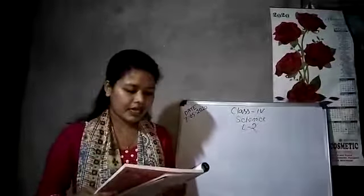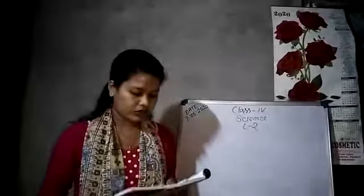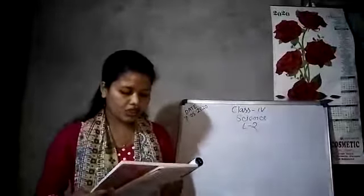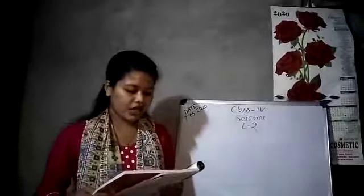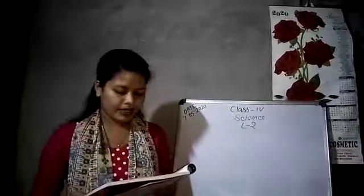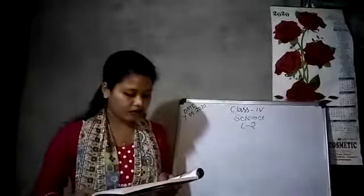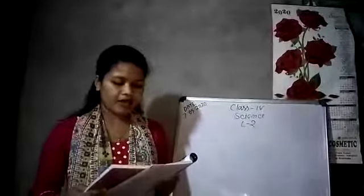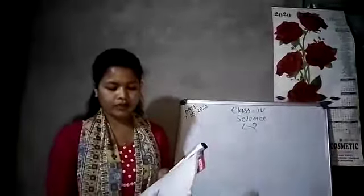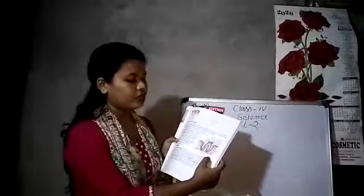Dentine is the next layer of our tooth. It is tough but not as hard as the enamel. The pulp is the innermost layer of the tooth. It has blood vessels and nerves. There is a diagram showing the structure of a tooth.